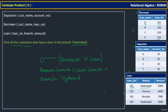Those two records match, but we still need to display only the customer names. So we take this entire result as one relation and apply projection to select only customer name — specifically borrower.customer_name. The output displays the names of customers who have a loan in the Hyderabad branch.